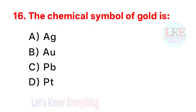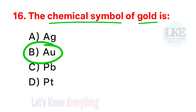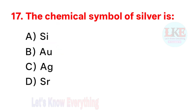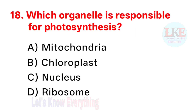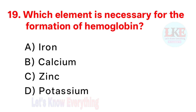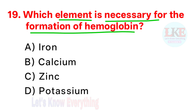Question number 16: the chemical symbol of gold is AU. Question number 17: the chemical symbol of silver is AG. Question number 18: which organelle is responsible for photosynthesis? Right answer option B: chloroplast. Question number 19: which element is necessary for the formation of hemoglobin? Right answer option A: iron.